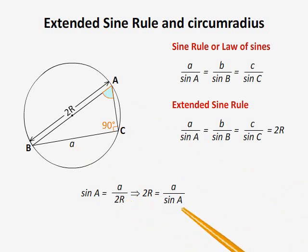This implies a/sin A = 2R. Thus, from the formula of the sine rule, we may easily interpret the extended sine rule involving the circumradius.